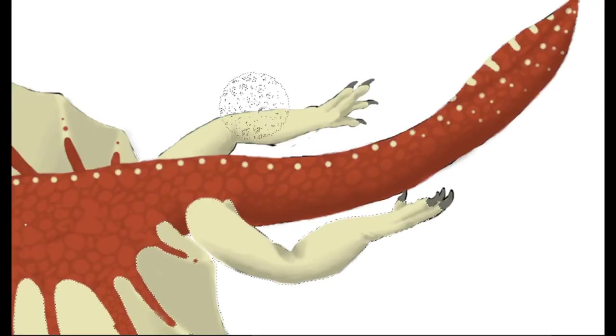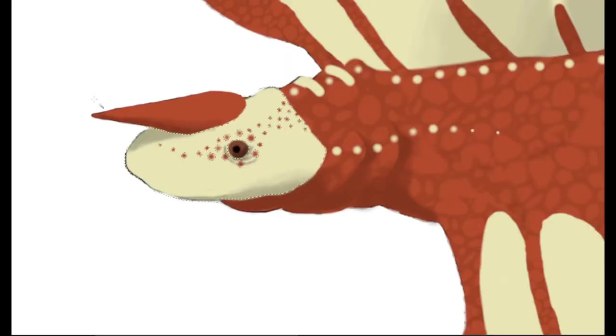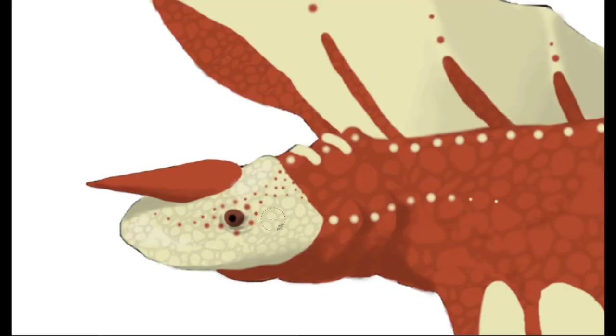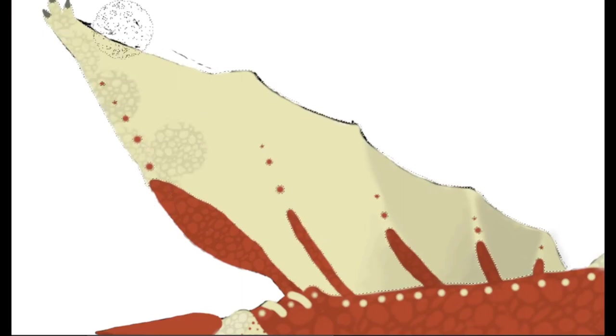Unlike other reptiles, the Iaculus does not kill through a venomous bite, or any kind of bite whatsoever. Instead, it kills its prey by ramming it with the hard spike on its head.